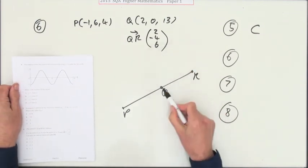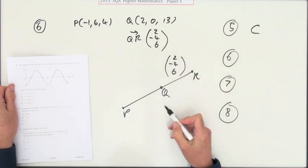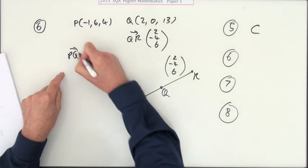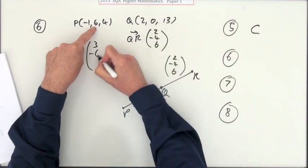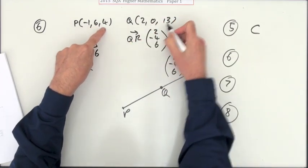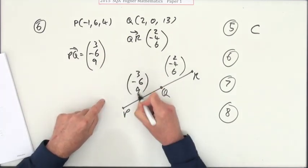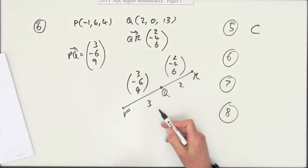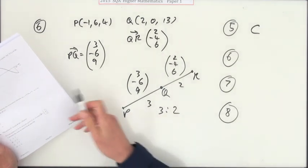So if I knew PQ I could compare them. So what's PQ? We can just do it by inspecting the moves. Negative 1 up to 2 would be a 3, 6 to 0 would be a back 6, and 4 to 13 would be a 9. So that part is 3, negative 6, 9. And you can see the ratios have to be the same for them all. The ratio is 3 to 2 in all of them, so the ratio is 3 bits to 2 bits.